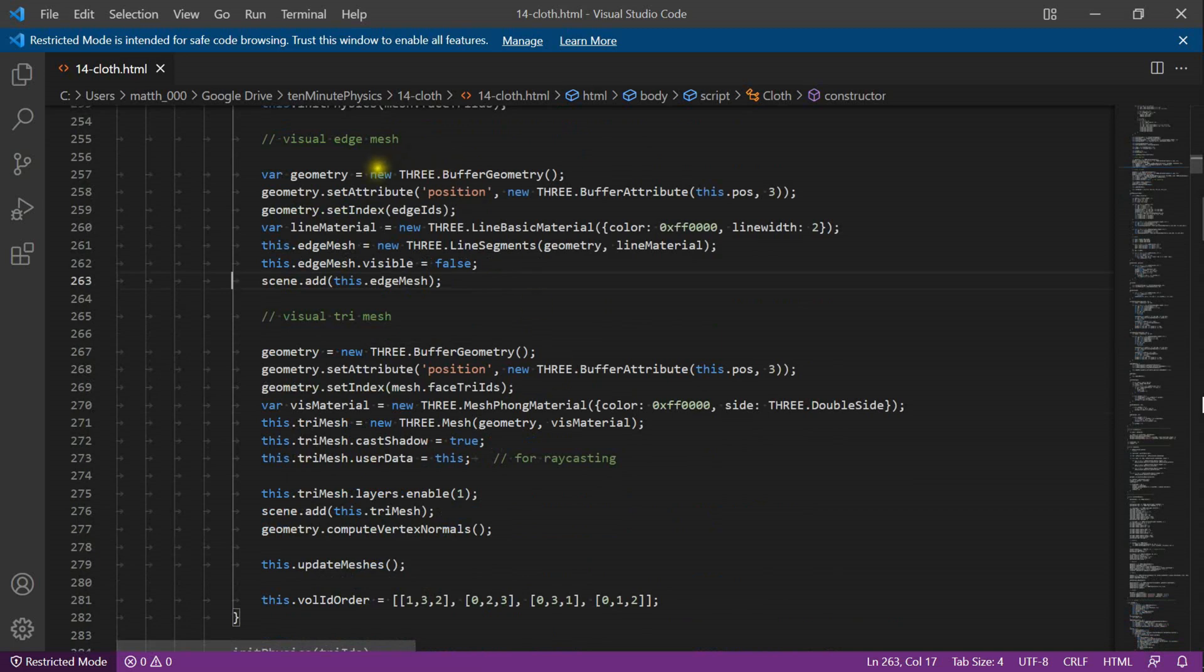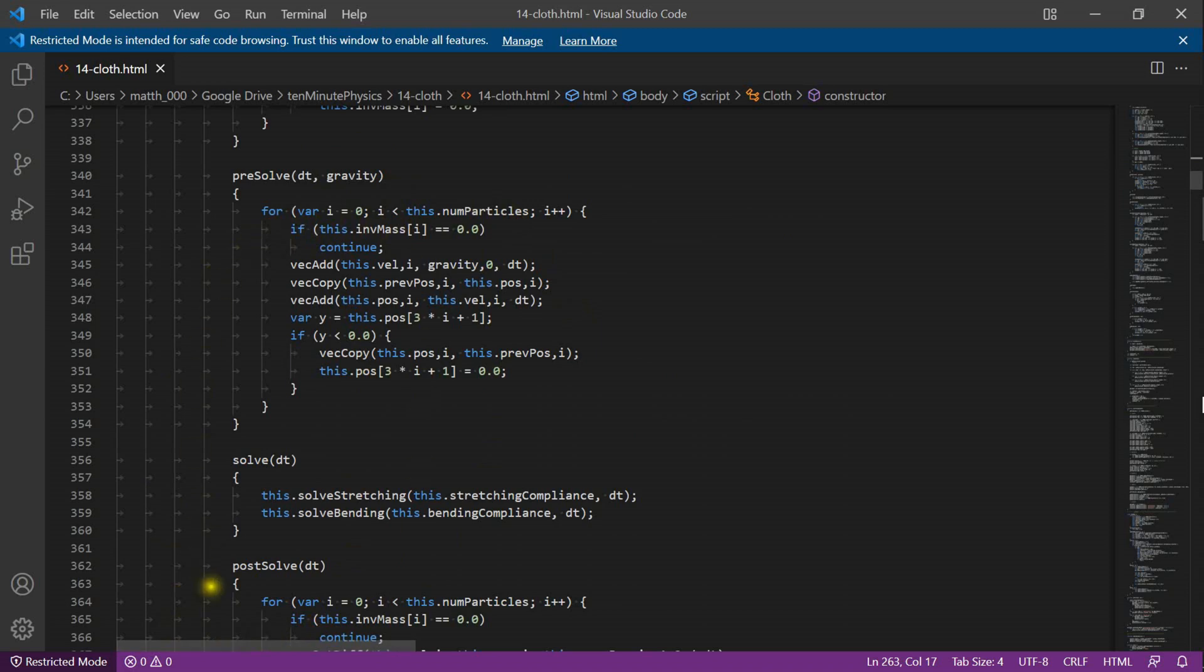Here I create the visual meshes, the edge mesh and the triangle mesh. This is the implementation of XPBD. The first loop updates all the velocities and all the positions of the particles.